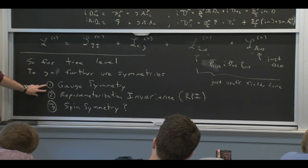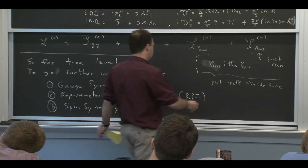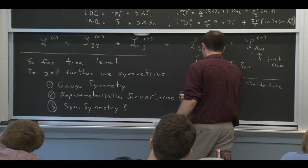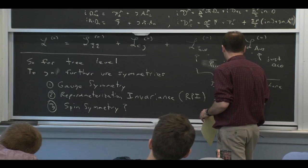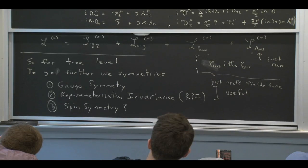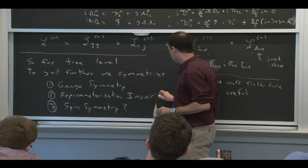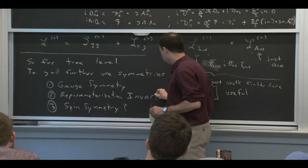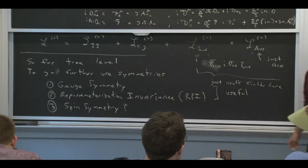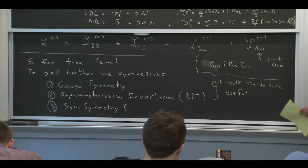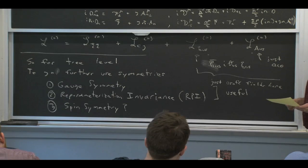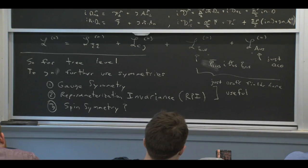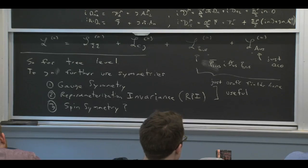These two here, number one and number two, will turn out to be quite important. Number three is not so important. Reparameterization invariance here—we like reparameterization invariance in HQET, except now it's different. We've introduced the parameters n and n-bar. We'll have to see what kind of symmetries we have with respect to that choice of basis vectors that we made. But it otherwise will be analogous to our discussion of HQET.